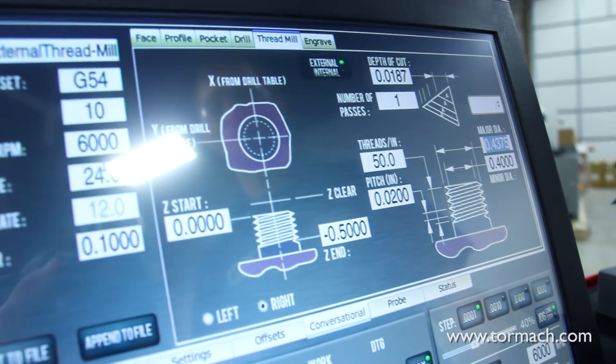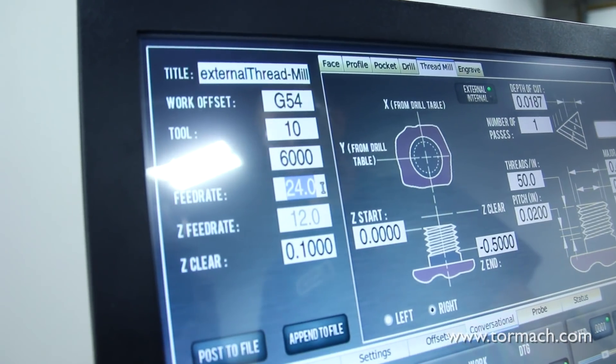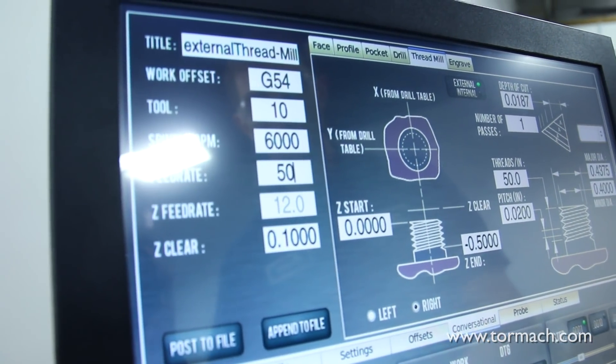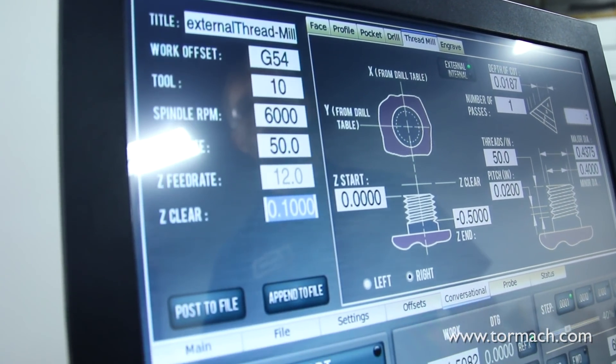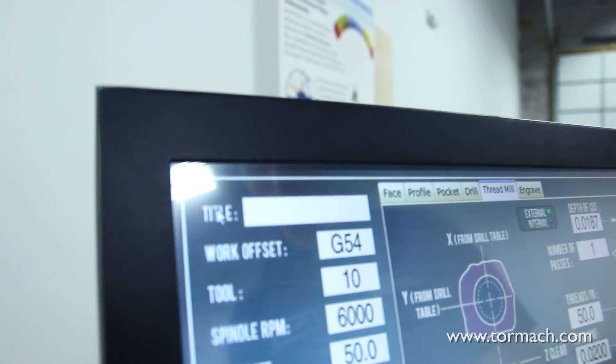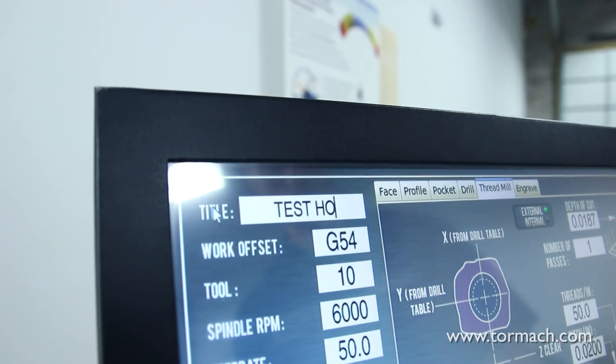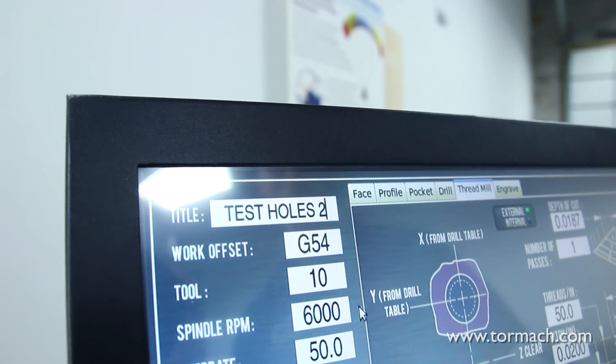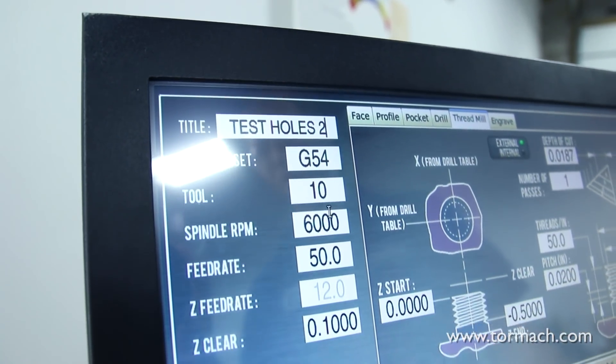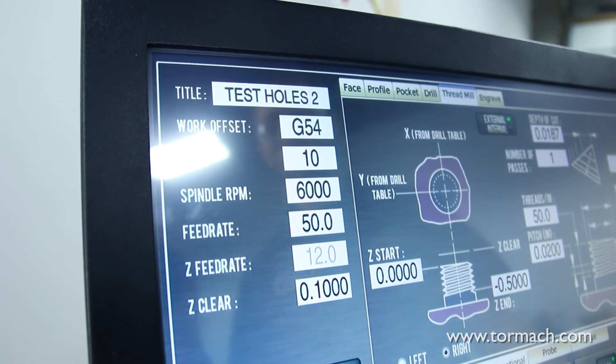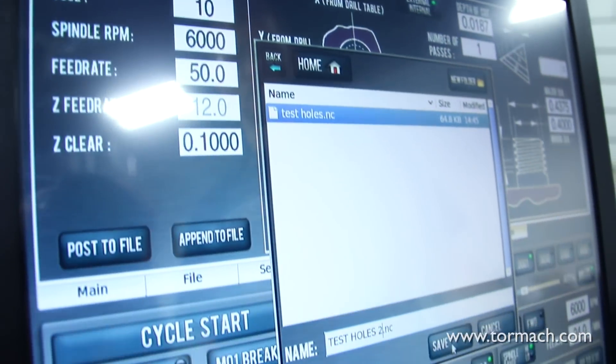For feed rates on this, I'm actually going to turn the feed rate up. I'm going to run it at about 50 inches a minute for this example. We'll name this test holes 2, and then all of our other stuff we're going to keep the same. We'll keep the same spindle speed and everything. We'll go ahead and post this program.